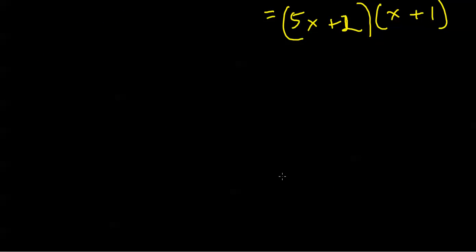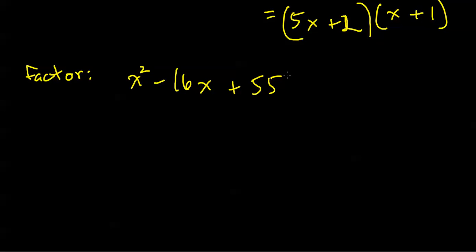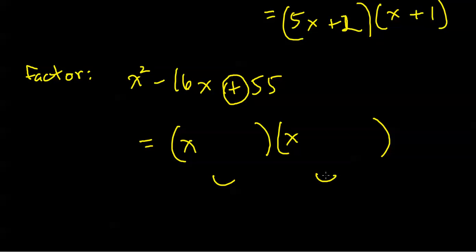We won't always be so fortunate to have all positive signs, and that does complicate things. Let's factor x squared minus 16x plus 55. The lead coefficient is 1, which makes my choice of first products simpler. I need factors of 55 in my last slots, and the inner and outer products have to add up to negative 16. If this sign is positive, the signs in between must be the same. If this sign is negative, they both have to be negative. I think 5 times 11 will work — my last product will be positive 55.